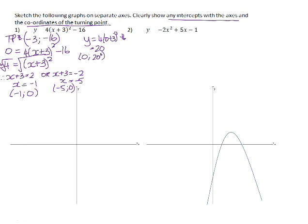If we now plot those points on the Cartesian plane, we have our y-intercept at 20, our x-intercepts at -1 and -5, and our turning point at (-3, -16). If we connect those with a smooth curve, that is what the parabola will look like.